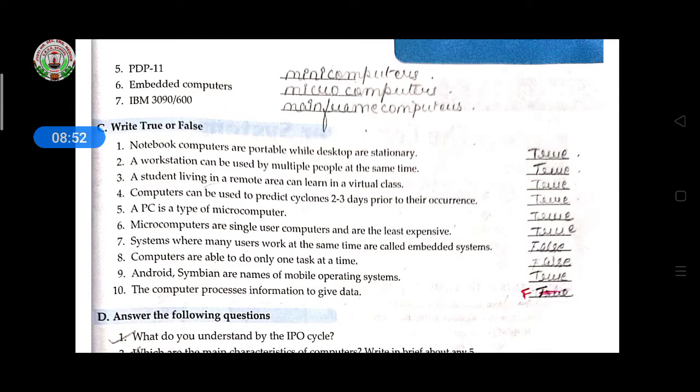Computers can be used to predict cyclones two to three days prior to their occurrence - true. A PC is a type of microcomputer - true. Microcomputers are single user computers and are least expensive - true. Systems where many users work at the same time are called embedded computers or embedded system - false. Computers are able to do only one task at a time - false.